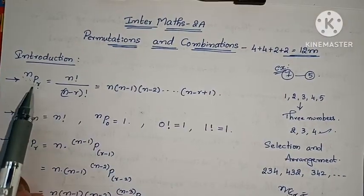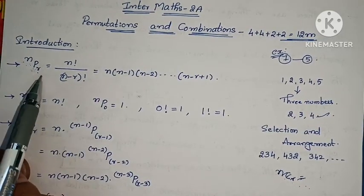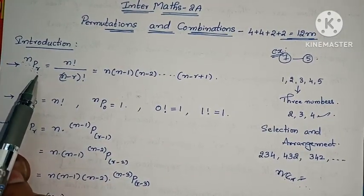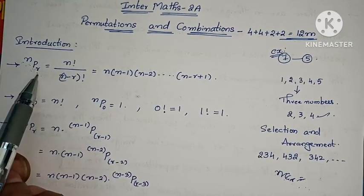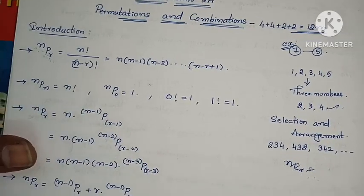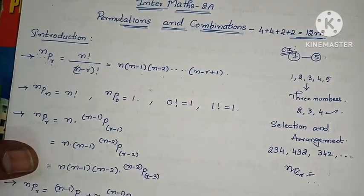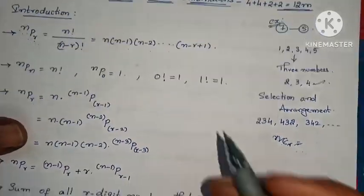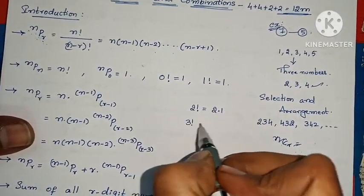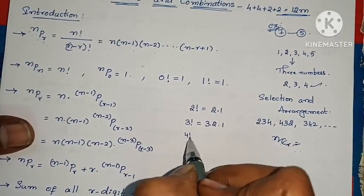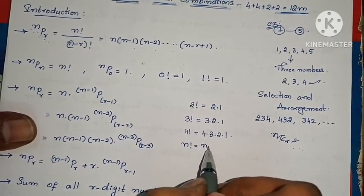P stands for permutations and C stands for combinations. NPR means N number of things taken R at a time. NPR equals n factorial by (n minus r) factorial. That is, n into n minus 1 into n minus 2 and so on up to n minus r plus 1. NPN equals n factorial. If you remember from the binomial theorem: 2 factorial is 2 into 1, 3 factorial is 3 into 2 into 1.